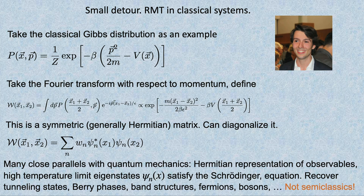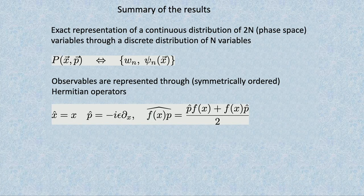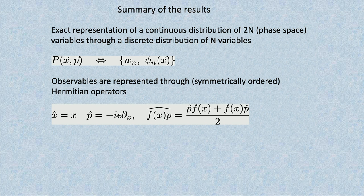It turns out there are lots of parallels to quantum mechanics. These ψ_N satisfy an approximate Schrödinger equation — there's no time here. You can get tunneling, Berry phases, band structures, and so on. This is not a semi-classical expansion; you can set ℏ to be 1, epsilon to be 1. In this formalism, developed in the 60s and sometimes the 40s but largely forgotten, you reduce the phase space: you map a continuous distribution p(x,p) into a set of discrete wave functions ψ_N(x) and weights — like eigenvalues.